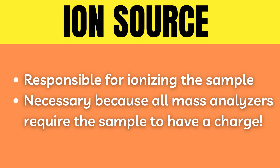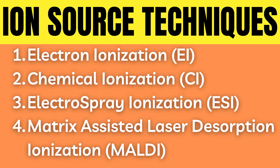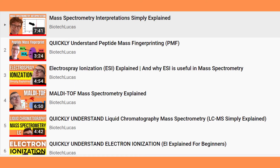One can use one of several different techniques in order to ionize the sample. These are electron ionization, chemical ionization, electrospray ionization, and matrix-assisted laser desorption ionization. I either have covered or will soon cover every single one of these different ionization techniques in further detail in other videos, all linked in the playlist by the end of this video.